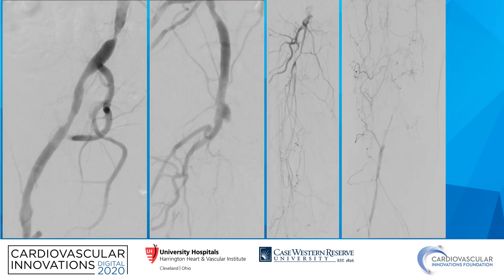His diagnostic angiogram showed severe disease in the common iliac artery, moderate disease in the external iliac artery, and total occlusion in the proximal SFA. The FEMPOP bypass is also occluded. As you can see here, there is reconstitution in the popliteal P2 segment.